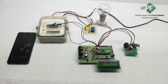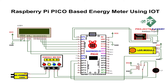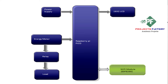Our circuit diagram looks like this. Here the ESP8266 module is connected to GPIO pins 0 and 1. The energy meter pulses are captured by an LDR and it is connected to GPIO pin 11. The load relay is connected to GPIO pin 10. You can see here our block diagram looks like this.